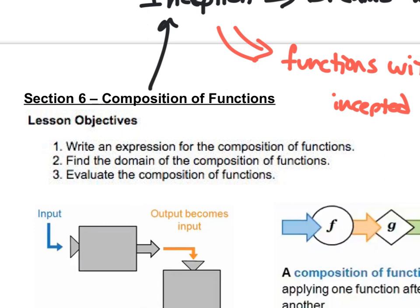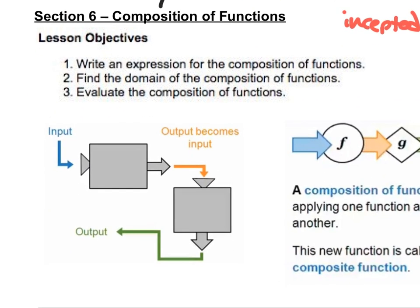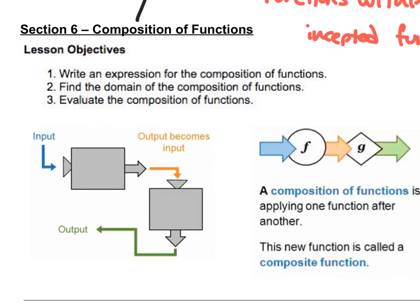So what we want to be able to do is write an expression for the composition of functions, find the domain, and evaluate the composition of functions. What you have is functions within other functions. You have an input x value, an operation happens, you get your y value. Then that output — the y value of your original function — becomes the input of your new function, and you get another output.